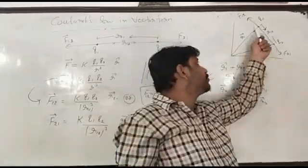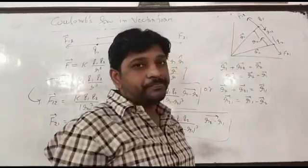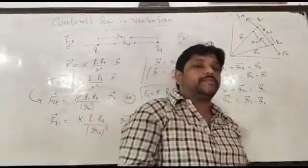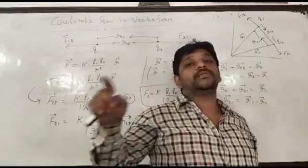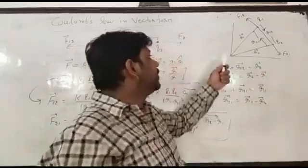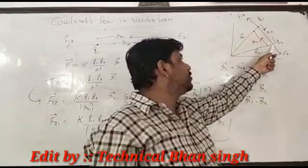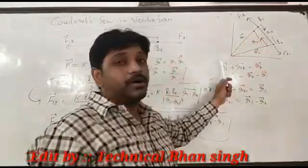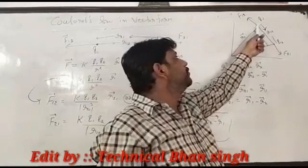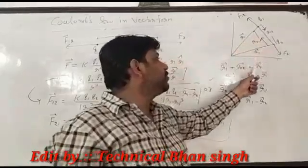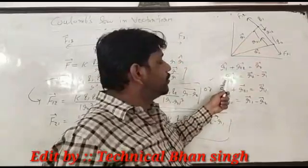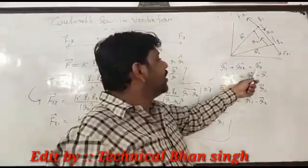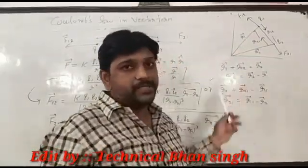By the mathematical triangle rule, sum of the two sides is equal to the third side. Means r1 plus r12 is equal to r2. Again, r1 plus r12 is equal to r2. So on r12, what is the value? r2 minus r1.